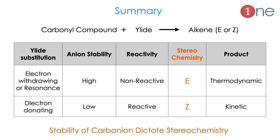Let us summarize the Wittig reaction. The carbonyl compound reacts with the ylide to give an alkene, which can be E or Z. The key is to look at the substituent groups on the ylide. If it is an electron-withdrawing group, the anion stability of the ylide is high, making it less reactive, and you get the E thermodynamically stable product. If it is an electron-donating group, the anion stability is low, the ylide is very reactive, and you get the kinetic Z-product. Electron-withdrawing group means E; electron-donating group means Z. The stability of the ylide dictates the stereochemistry.